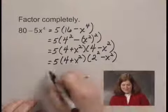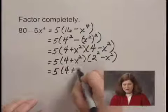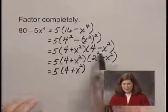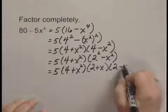So now I can factor this as, and I'm going to copy down all of my other factors, 2 squared minus x squared is 2 plus x times 2 minus x.